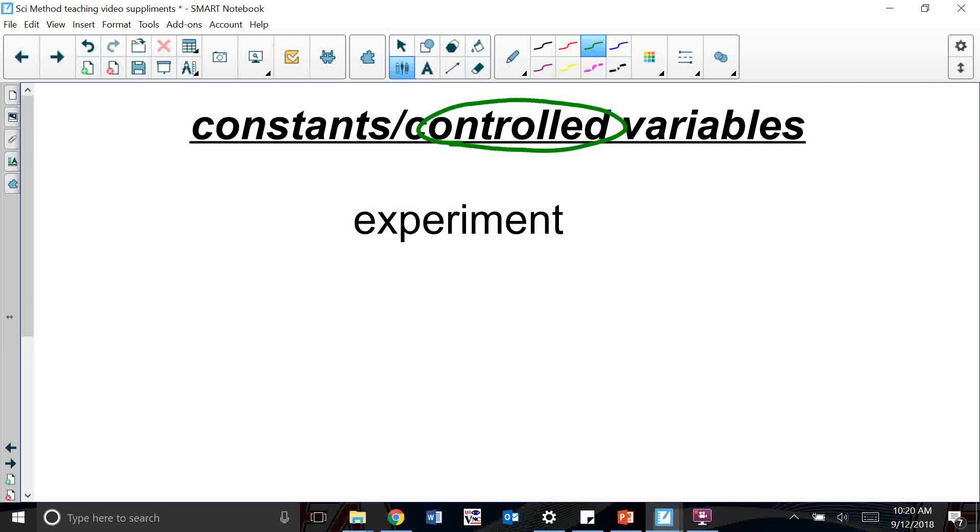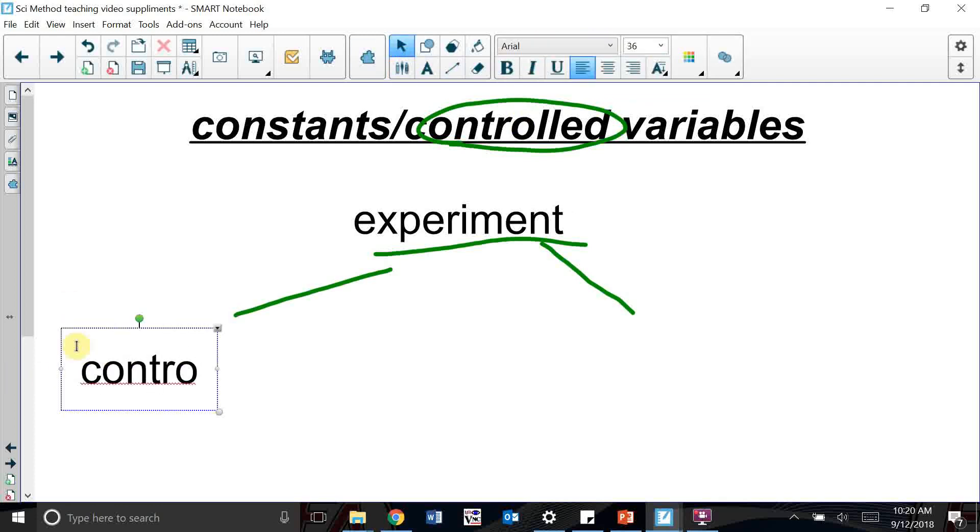Think of it like this. If I have my experiment, I always have at least two groups. So I have my control group and then I have my experimental group.